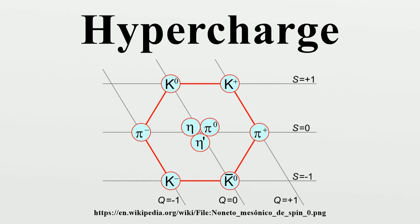SU(3) weight diagrams are two-dimensional with the coordinates referring to two quantum numbers: I3, which is the z component of isospin, and Y, which is the hypercharge. Additional quantum numbers include charm, bottomness, topness, and baryon number.